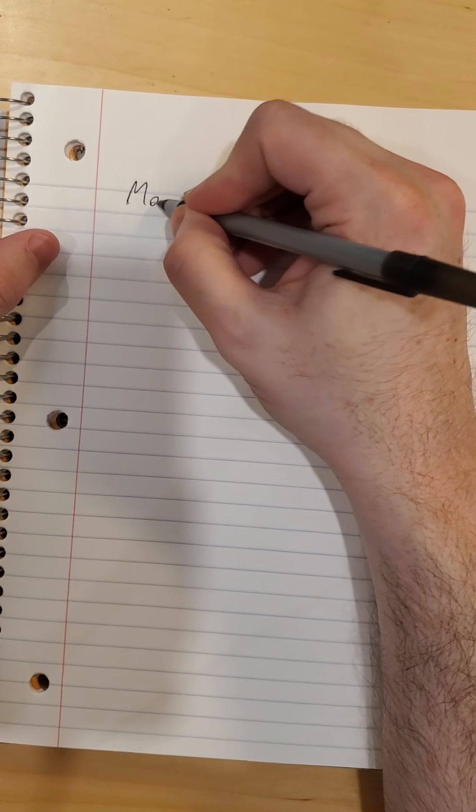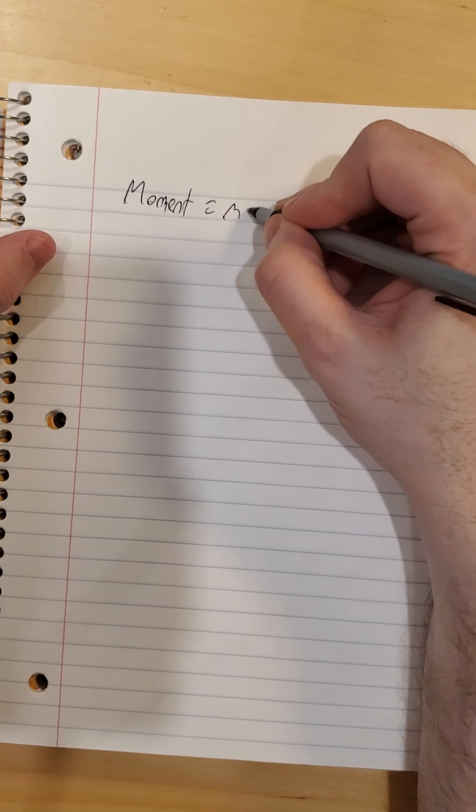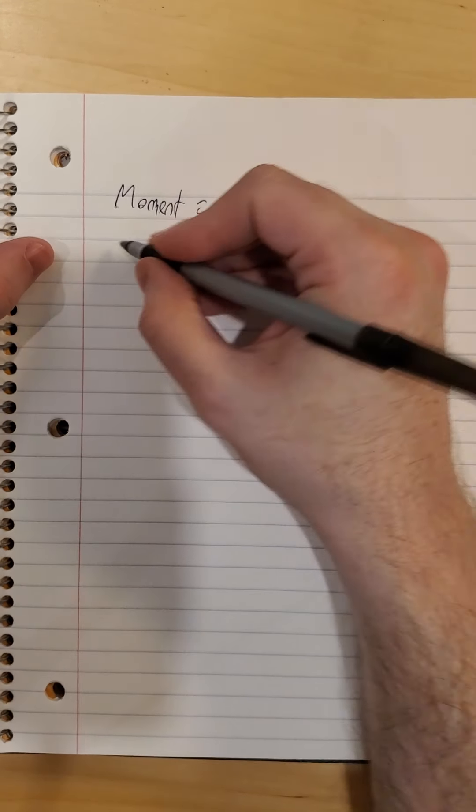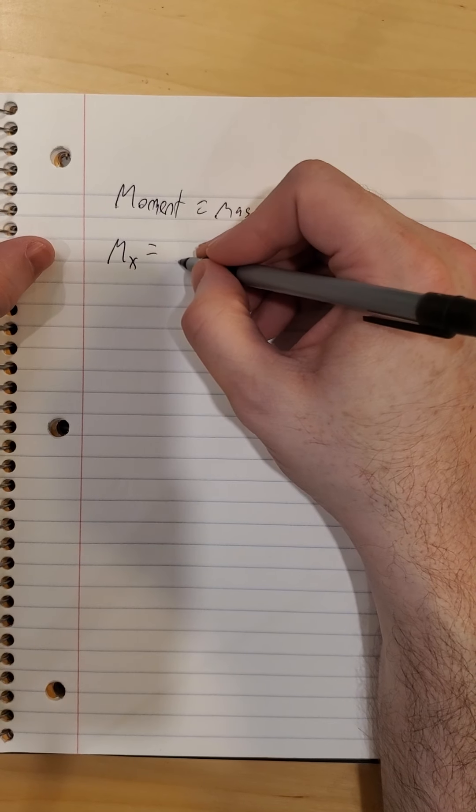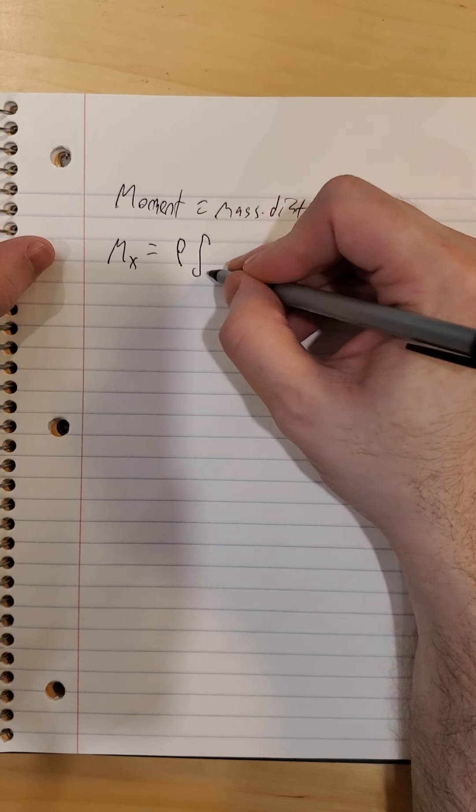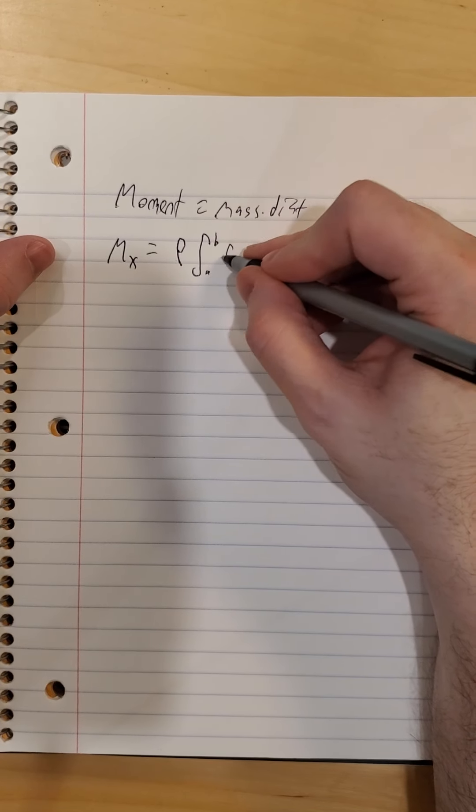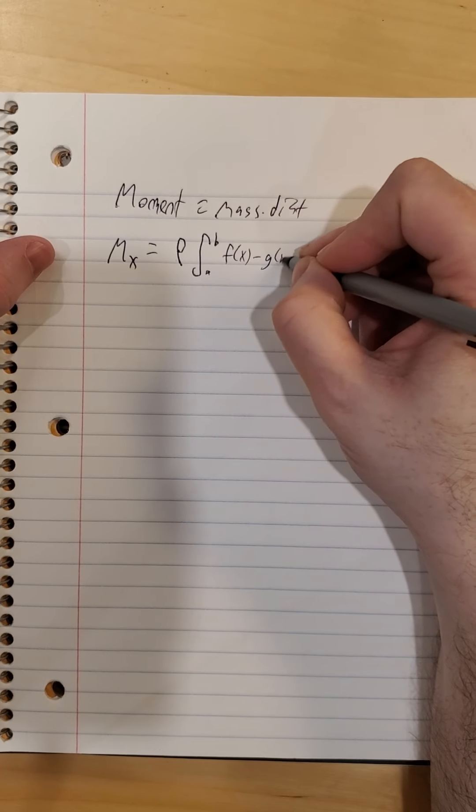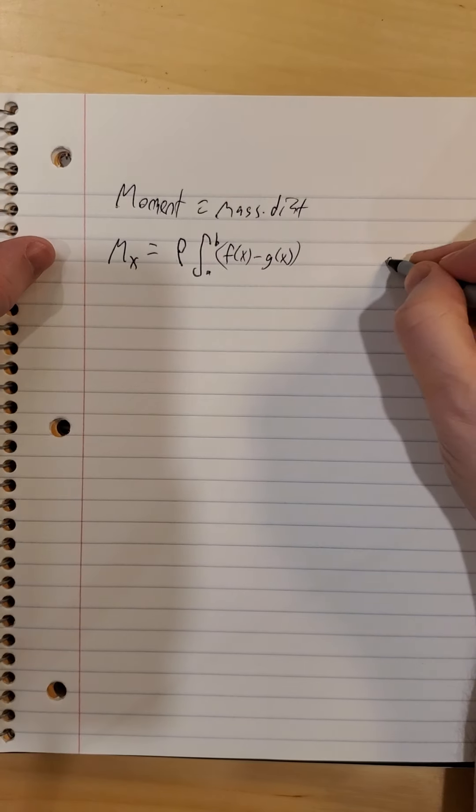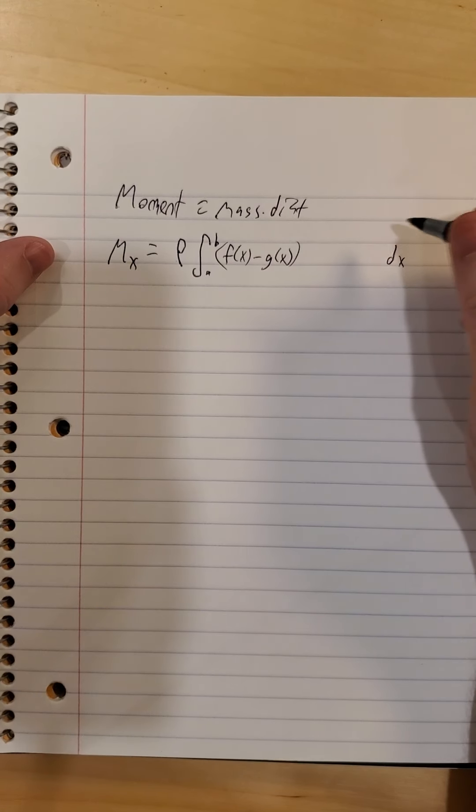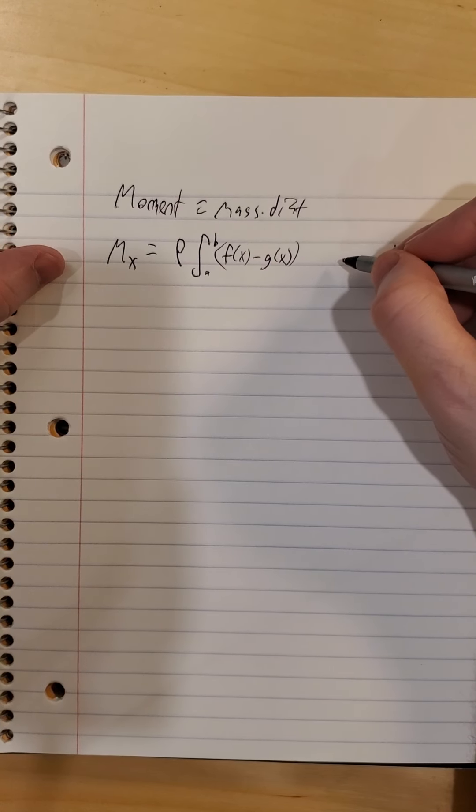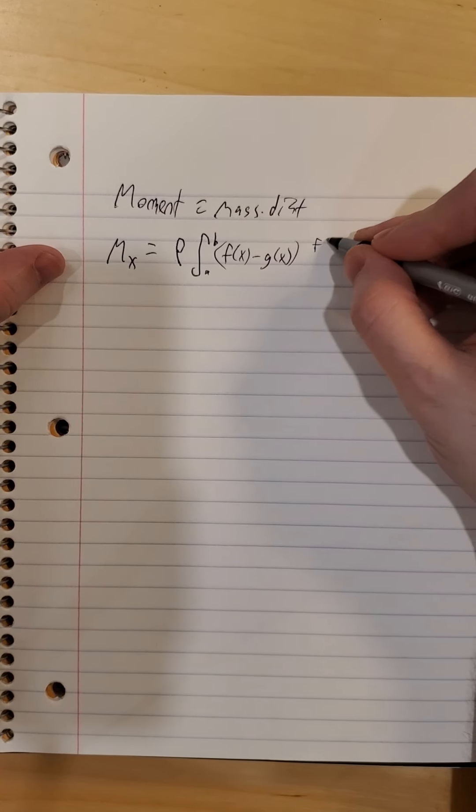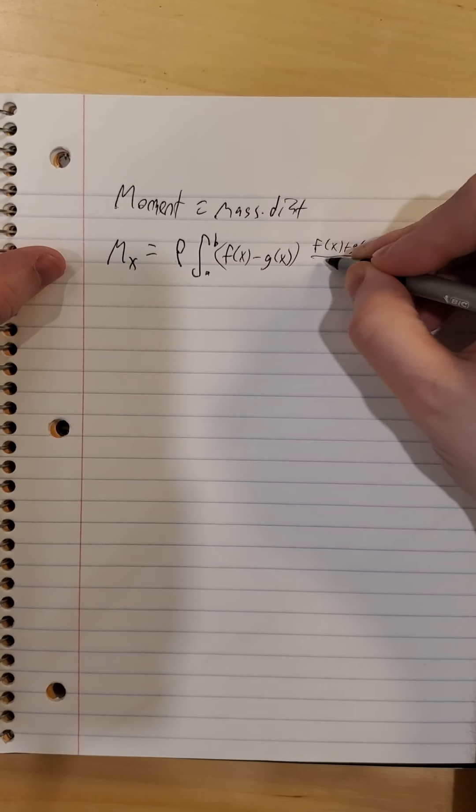So then our moment, remember, is mass times distance. So our moment with respect to the x-axis, our mass, same from the previous page, rho times the integral from a to b of f of x minus g of x. We're going to hold off on the dx. We need a distance in there. So our distance from the x-axis, that would be our f of x plus g of x all over 2.